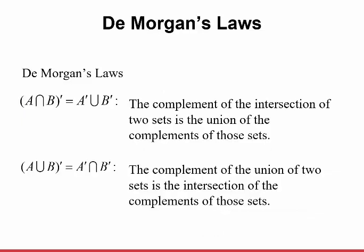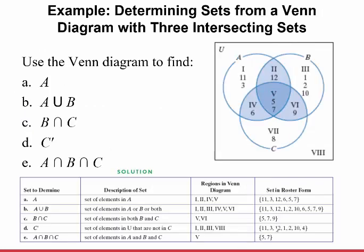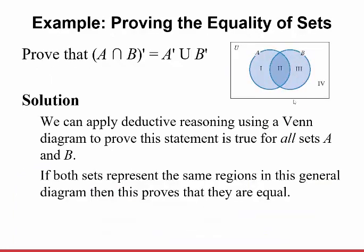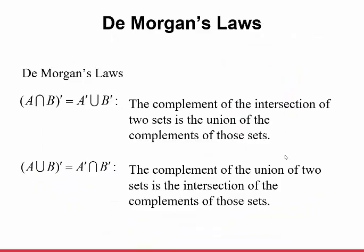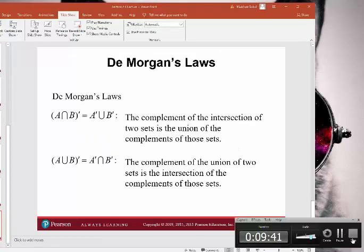The last concept is DeMorgan's law: (A∩B)' is equivalent to A'∪B', and (A∪B)' is equal to A'∩B'. In the next lecture, we'll return to two- and three-set problems using word problems and setting up Venn diagrams for them.